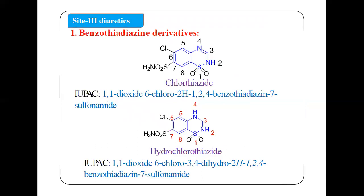The third category is site 3 diuretics. The first class within site 3 is benzothiadiazine derivatives. An example from the syllabus is chlorothiazide. The structure of chlorothiazide has a benzene ring fused with a six-membered thiadiazine ring. We give sulfur preference and start numbering from sulfur at position 1, counting around the ring: 1 through 8.